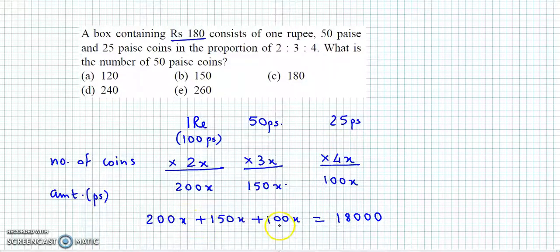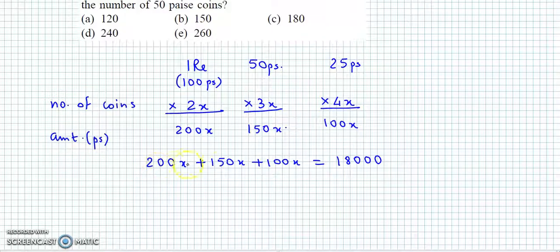To left hand side mein bhi total jo hai wo paise mein hai, right hand side mein bhi amount is in paise. So let us solve this: 200 plus 100, 300 aur ye ho jayega 150 so that becomes 450x is equal to